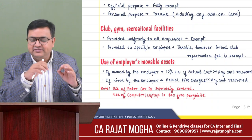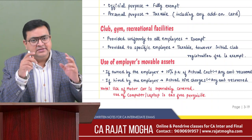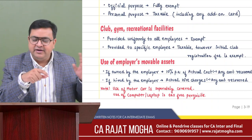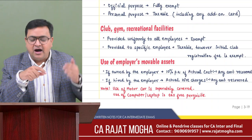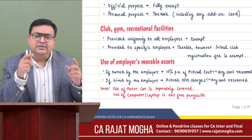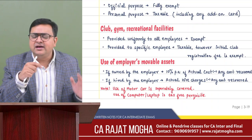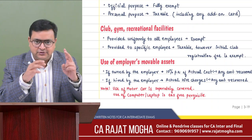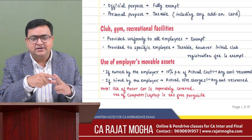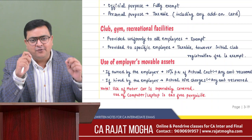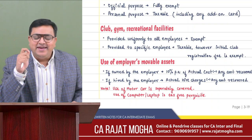Please remember that rent-free accommodation will not be covered here, because we know how to calculate that perquisite value — we have already discussed that. Second, if you are using a motor car provided by the employer, that will also not be covered here, because we understand how to value the motor car perquisite, which we have already done in our last lecture. So two things: RFA is not covered here, and motor car facility is not covered here.